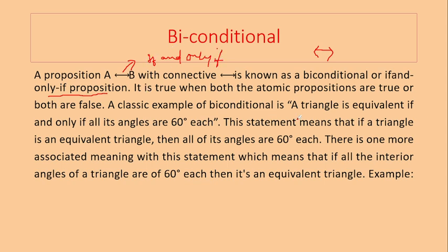The classic example of bi-conditional is: a triangle is equivalent if and only if all its angles are 60 degrees.